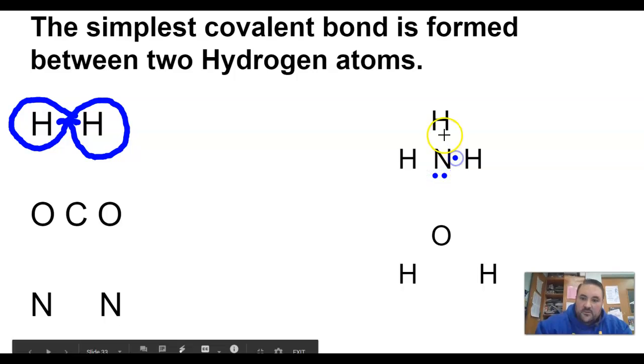So what happens with nitrogen, it shares one with this hydrogen, it shares one with that hydrogen, and it shares one with that one. It actually forms three single covalent bonds. Each one of these is what I call a single covalent bond. Eventually, this is ammonia, and it looks like this. Very common in household cleaning chemicals.